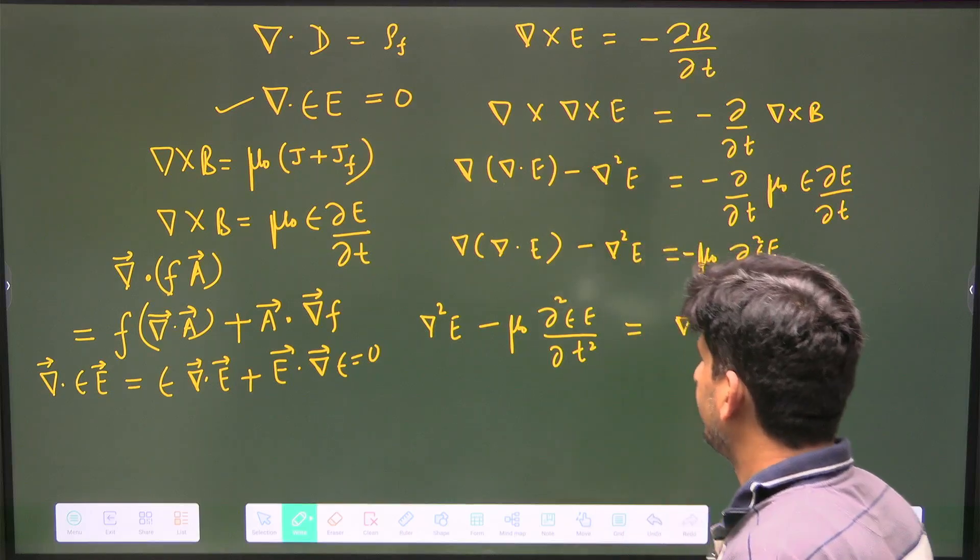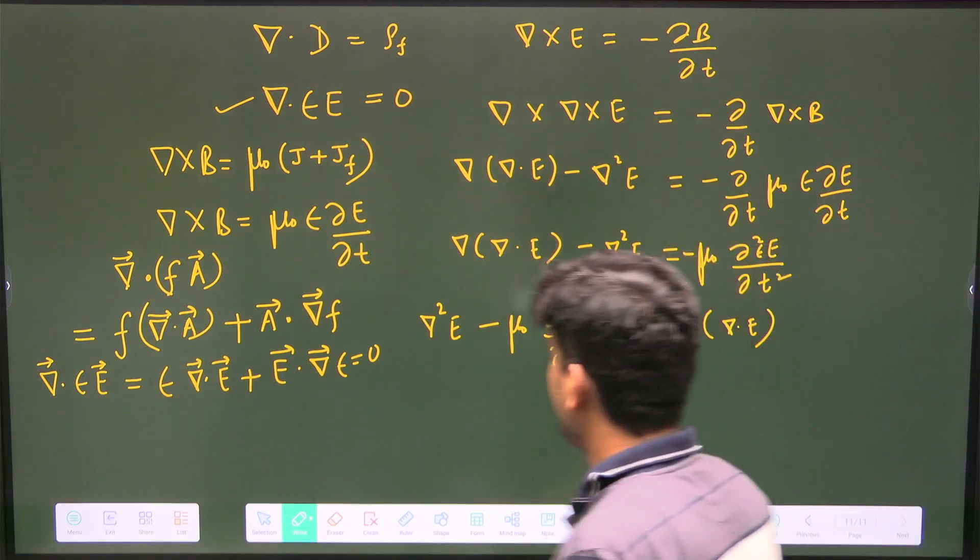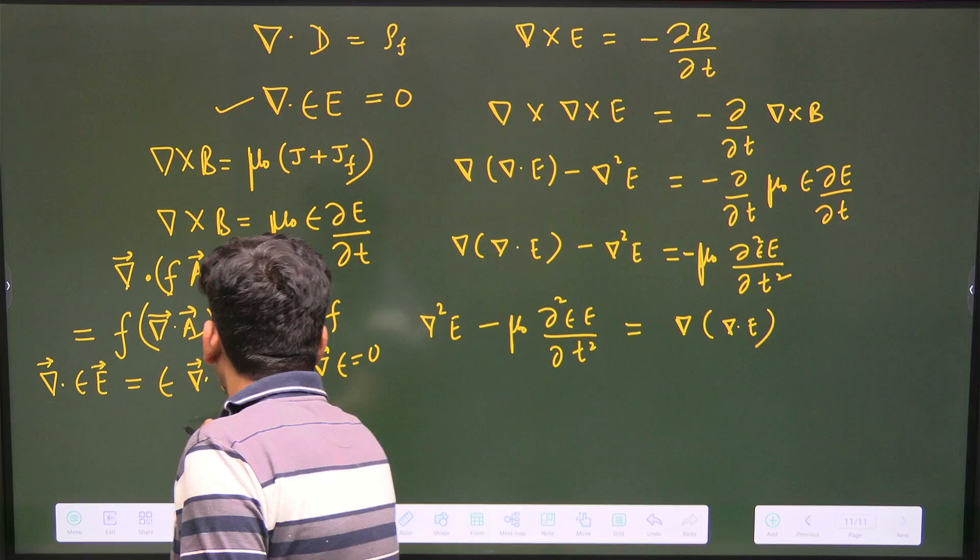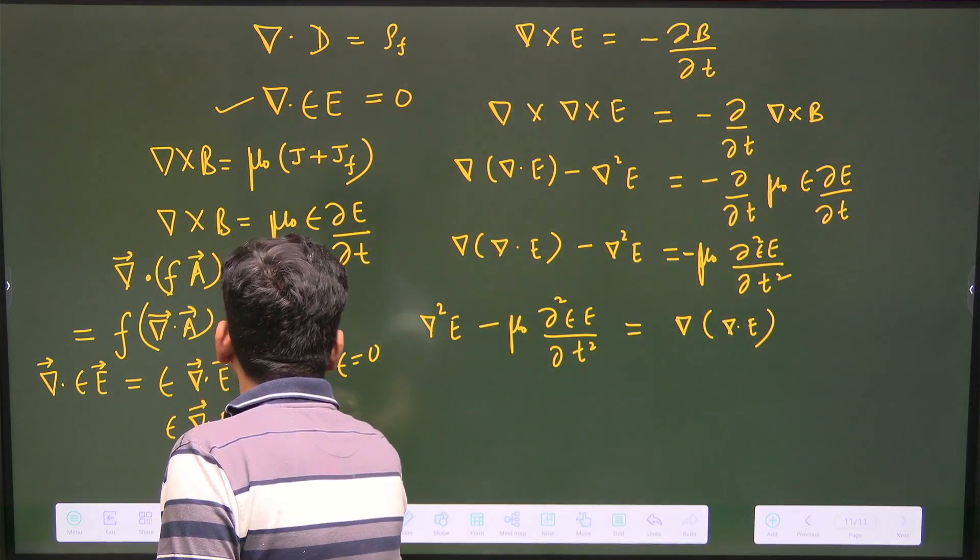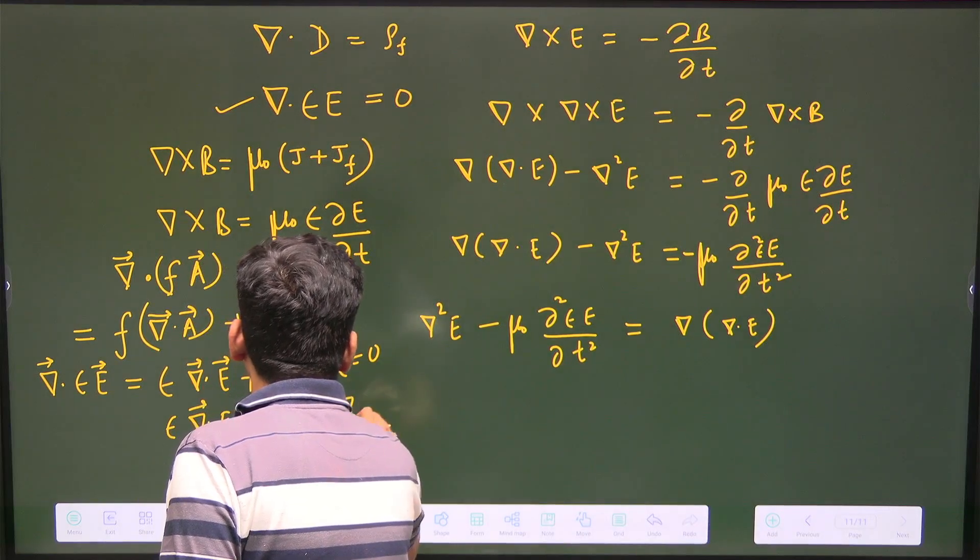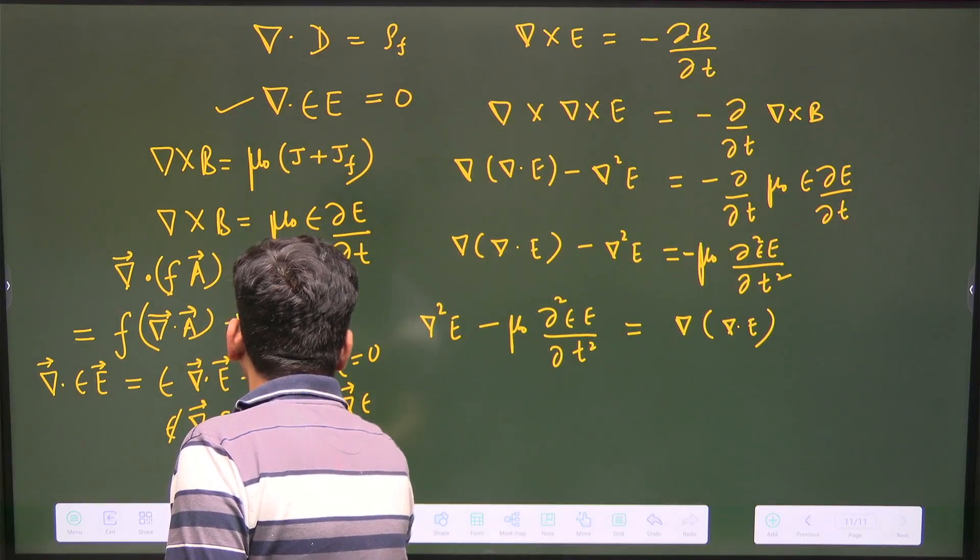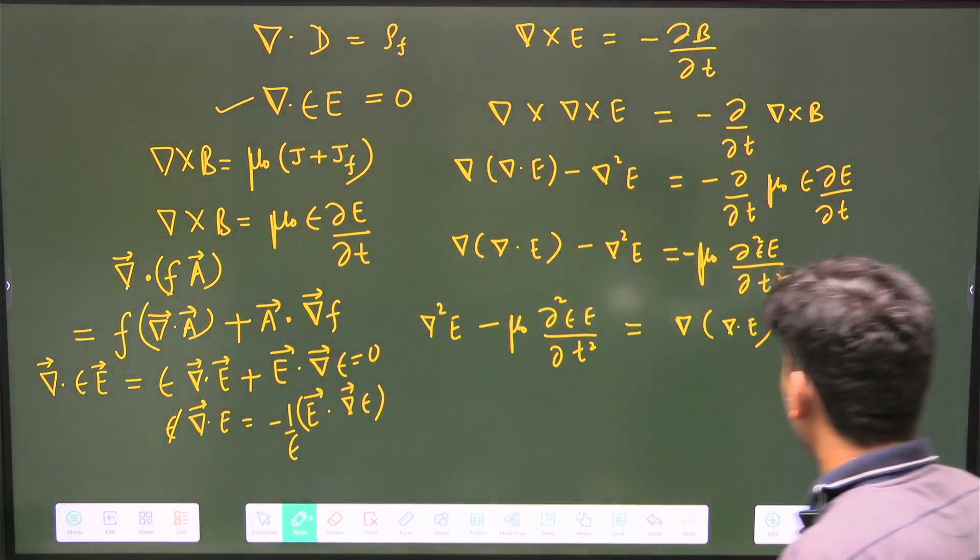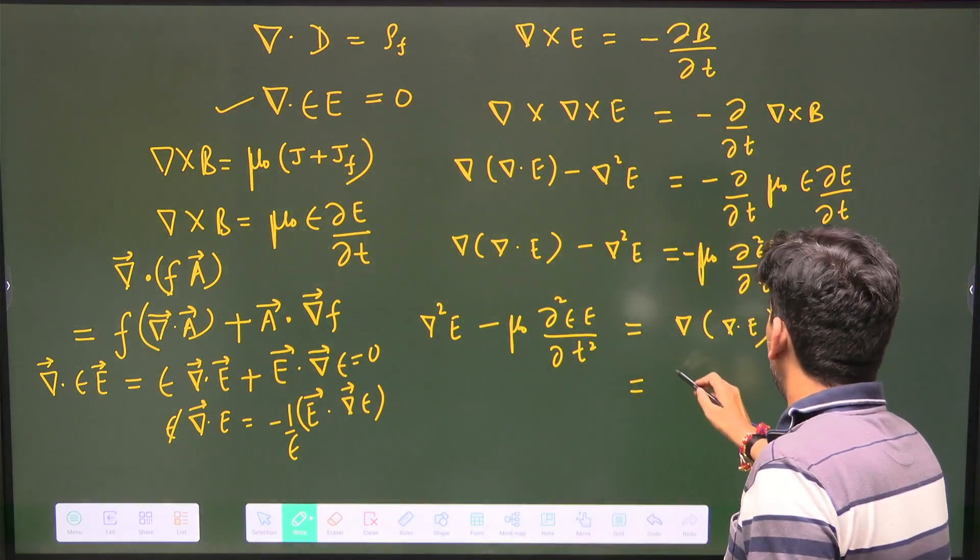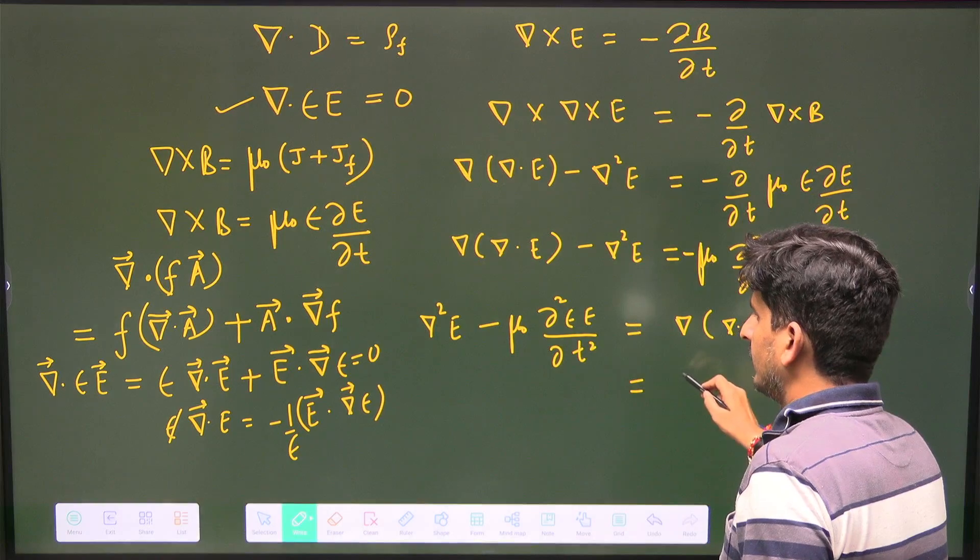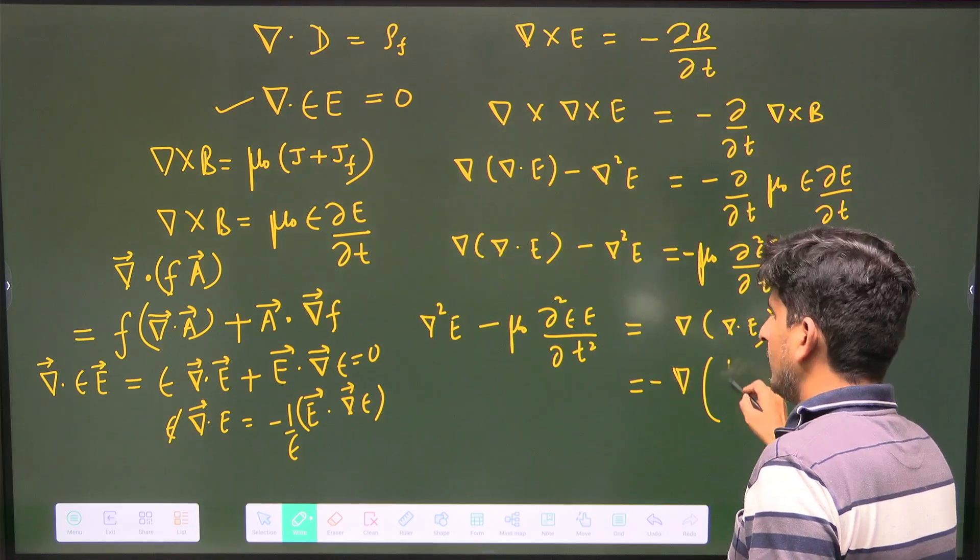Just see grad of del dot E. Can we get del dot E from here? So ε del dot E is equal to minus E dot grad of ε, and taking ε to the other side, it will become one by ε into this.